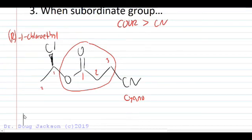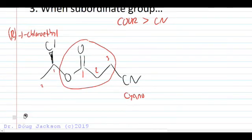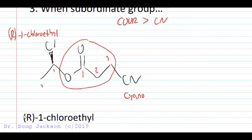So naming esters, we need to name that group attached to oxygen first. So that's an R, 1-chloroethyl, skip a space there, we need a second word, 3-cyano. How many carbons? So R, 1-chloroethyl, 3-cyano-propanoate is our final name.